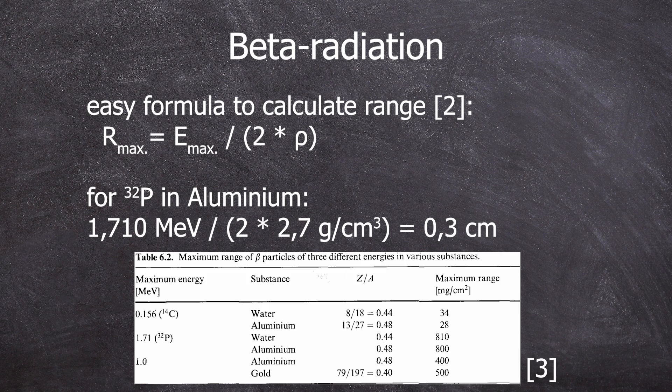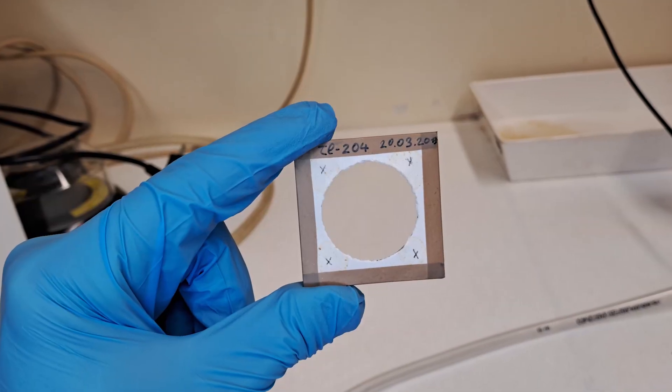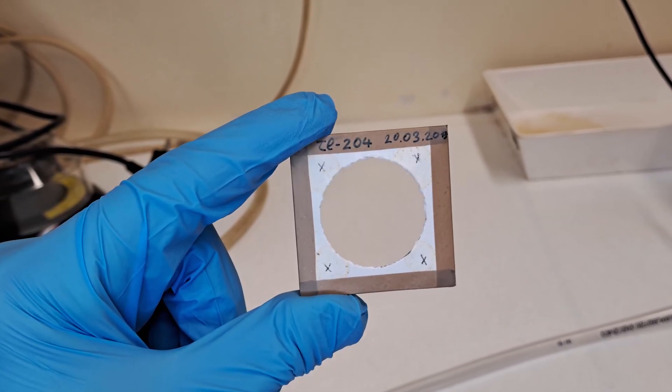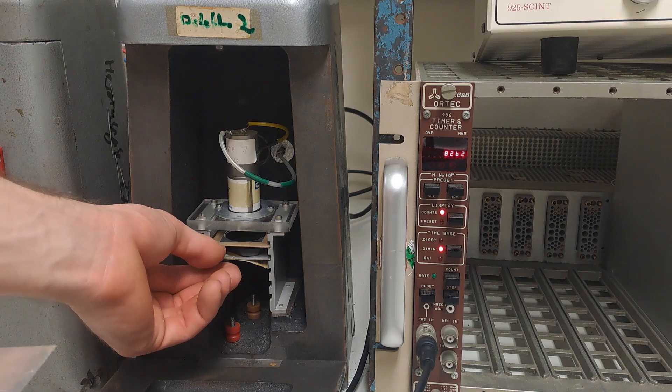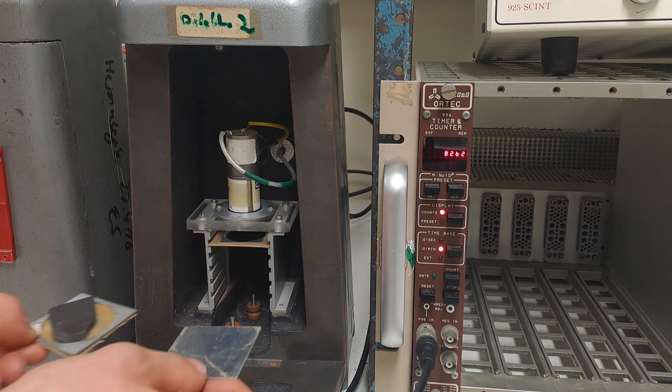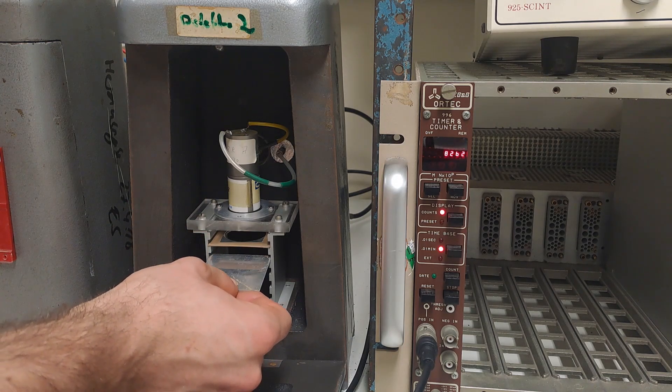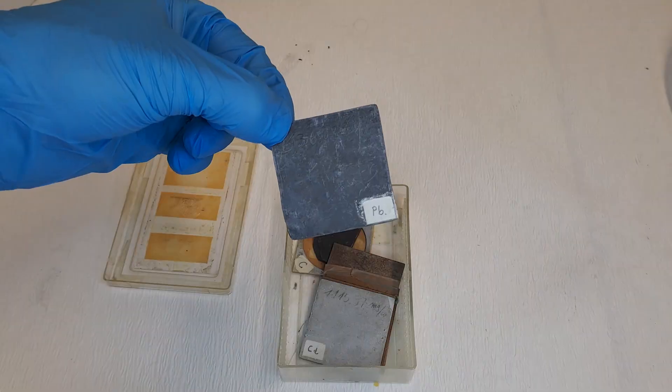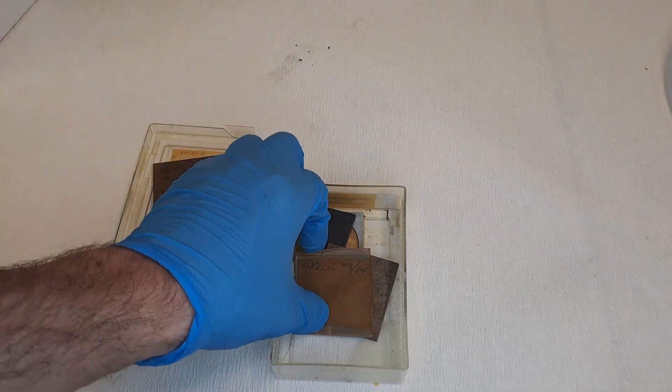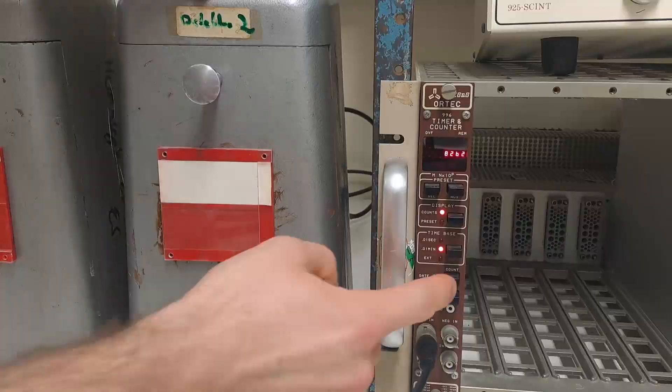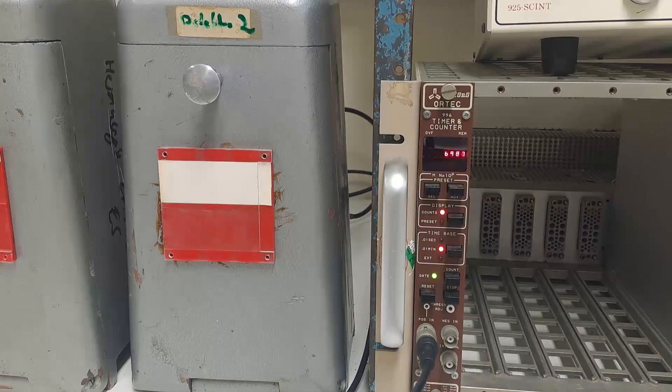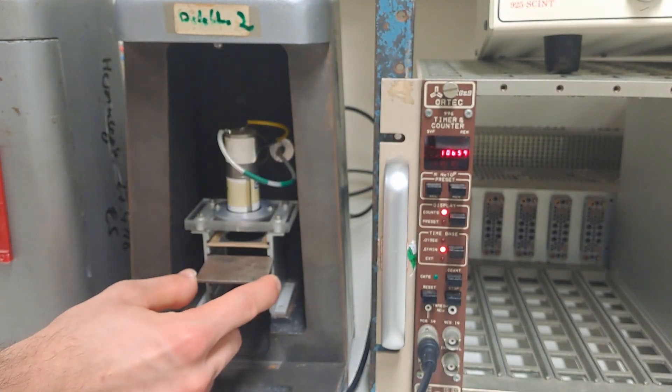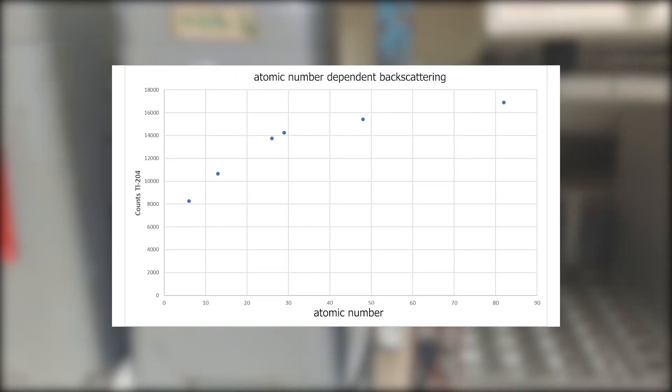Now we can move on to a backscattering experiment. For this, the thallium-204 source is set up in this specific way. Unfortunately, I was only able to get meaningful results with the thallium-204 source. The source is placed in the first slot and materials of different atomic numbers—lead, cadmium, copper, iron, aluminum, carbon—are placed in the second slot. As the diagram shows, the backscattering depends on the atomic number. But why?